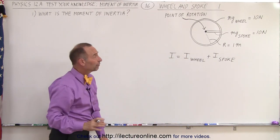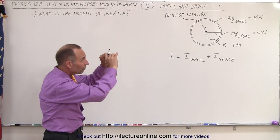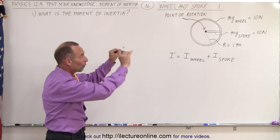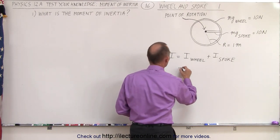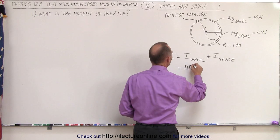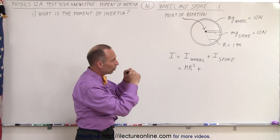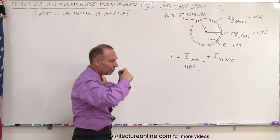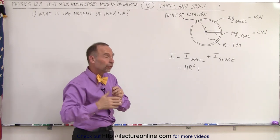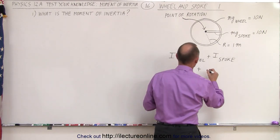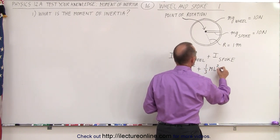The moment of inertia of the wheel, since all of the mass is a distance r away from the center rotation, would be equal to mr squared. And the moment of inertia of the spoke would be a long bar that's rotating about the end, which is one-third ml squared.